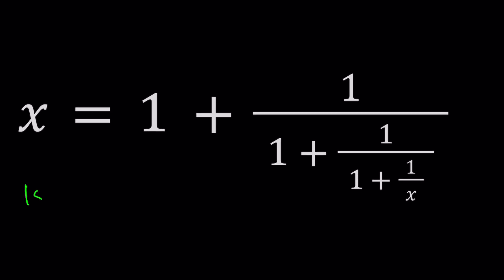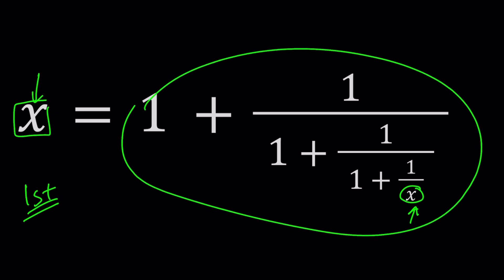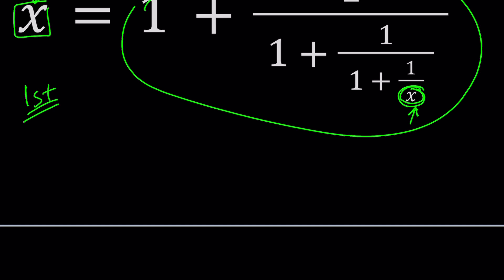For my first method I just want to tell you that this expression is interesting because it contains itself. What does that mean? Notice that we have an x here but the whole thing is also called x, which means this x can be replaced with this x because they are the same. This x is equal to this, so x can be replaced with the whole thing. The left hand side is still going to be x.